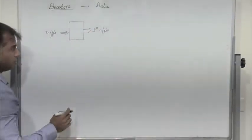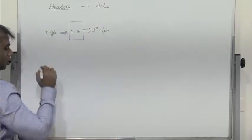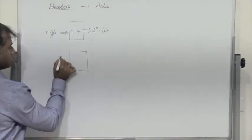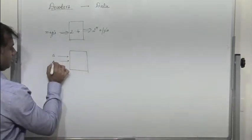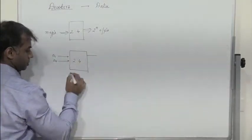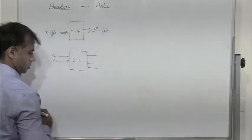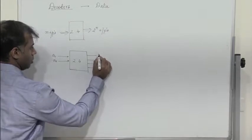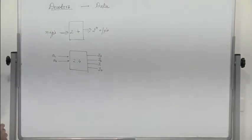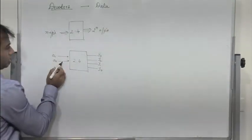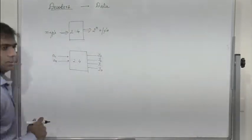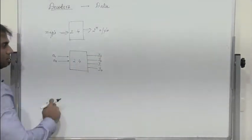The simplest example is a 2-to-4 decoder. In a 2-to-4 decoder, there are 2 input lines. Let the 2 input lines be A1 and A0, and there are 4 output lines: Y3, Y2, Y1, and Y0. When A0 and A1 are both 0, we find that Y0 is high and all the remaining 3 outputs are low.